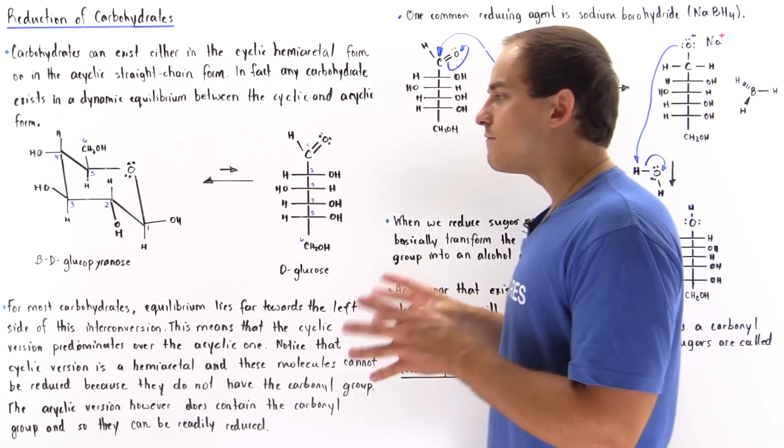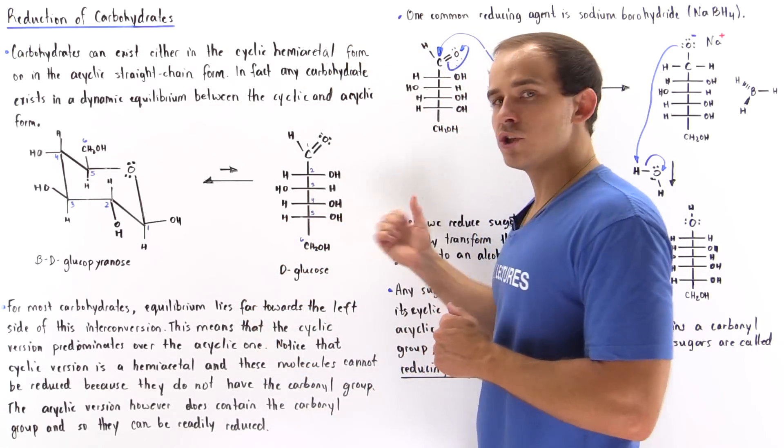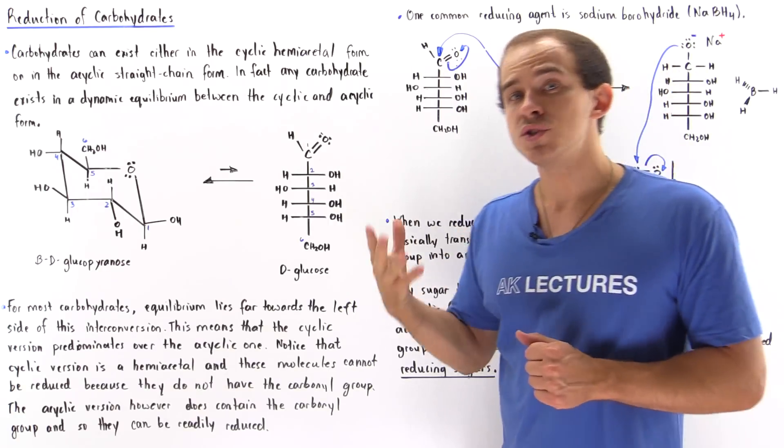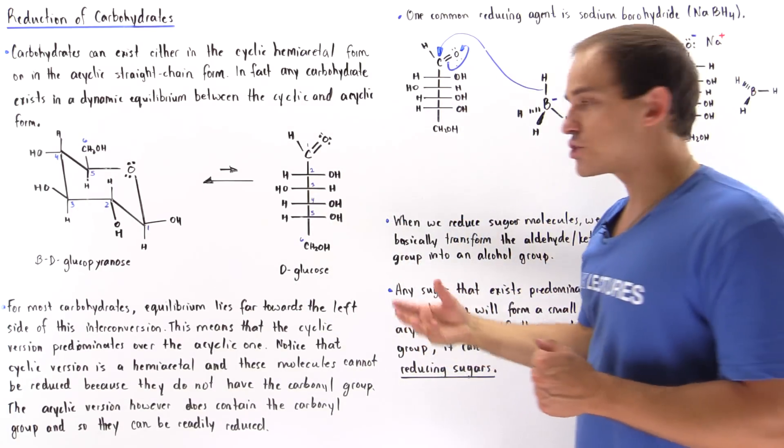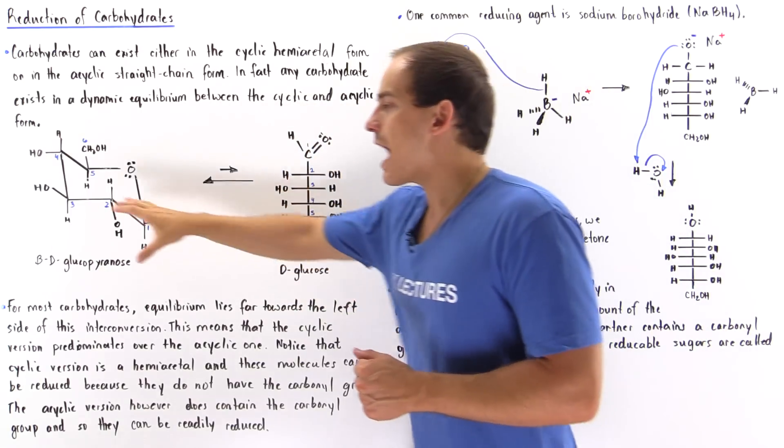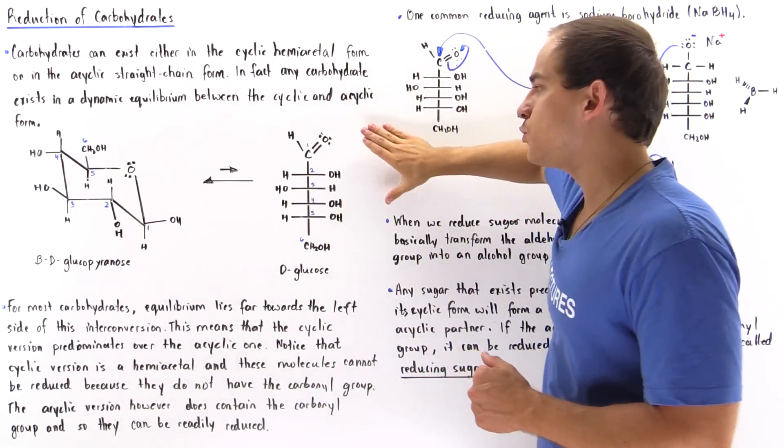Now even though we have a tiny amount of this acyclic version of glucose, that tiny amount in the presence of a reducing agent, such as sodium borohydride, will be reduced. And as this is depleted, as this is reduced, our cyclic version will begin to transform into this version.